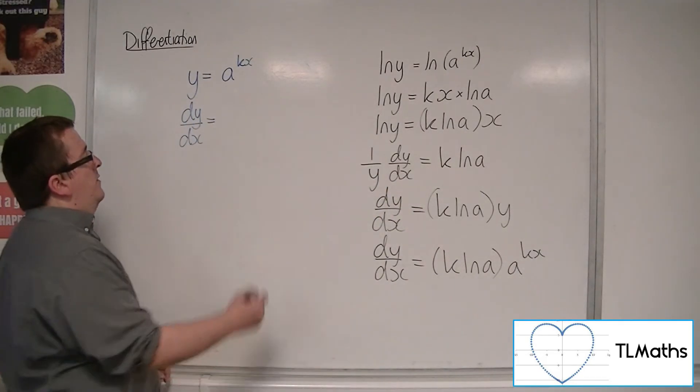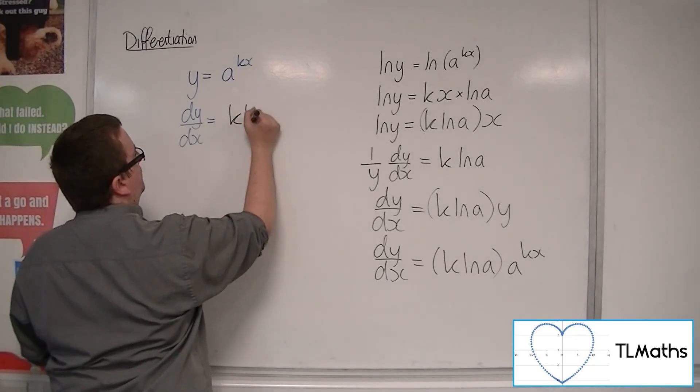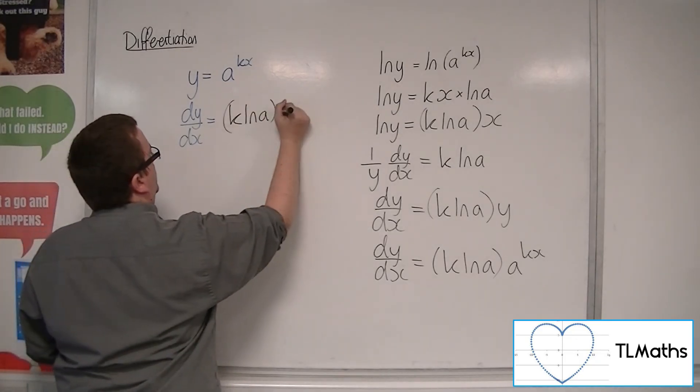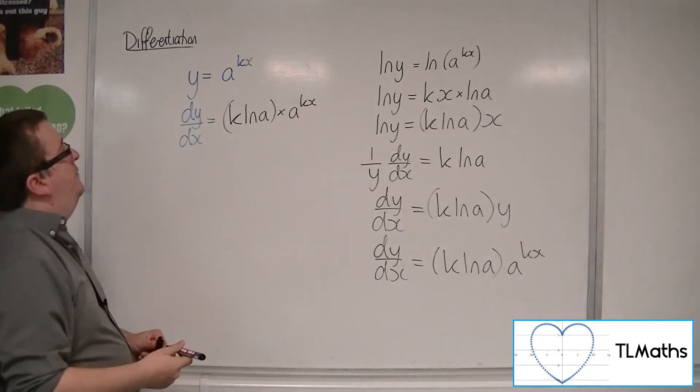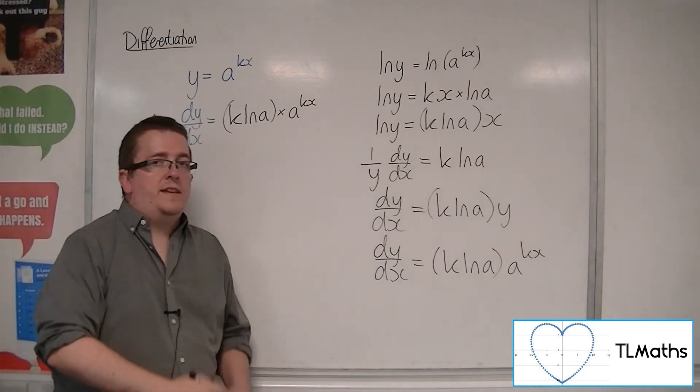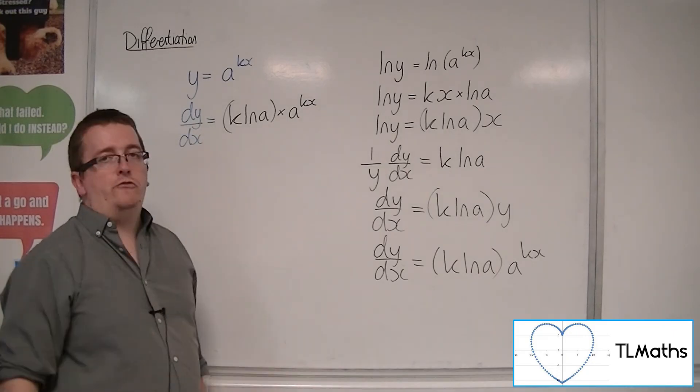So that is the gradient function of a to the kx, using implicit differentiation.